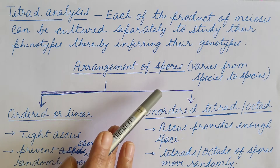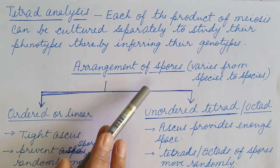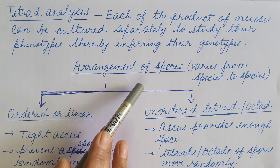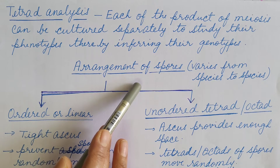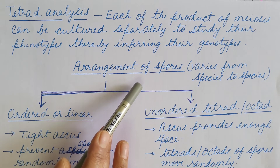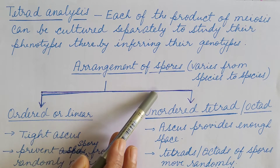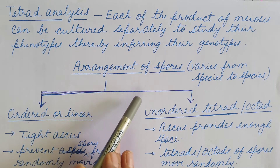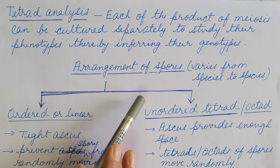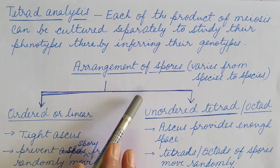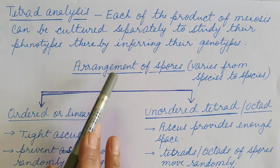After the fusion, diploid zygotes are produced and then zygotic meiosis takes place — both meiosis I and meiosis II. In some cases, mitosis also takes place, as a result of which spores are produced. These spores are contained in a sac-like structure known as ascus.